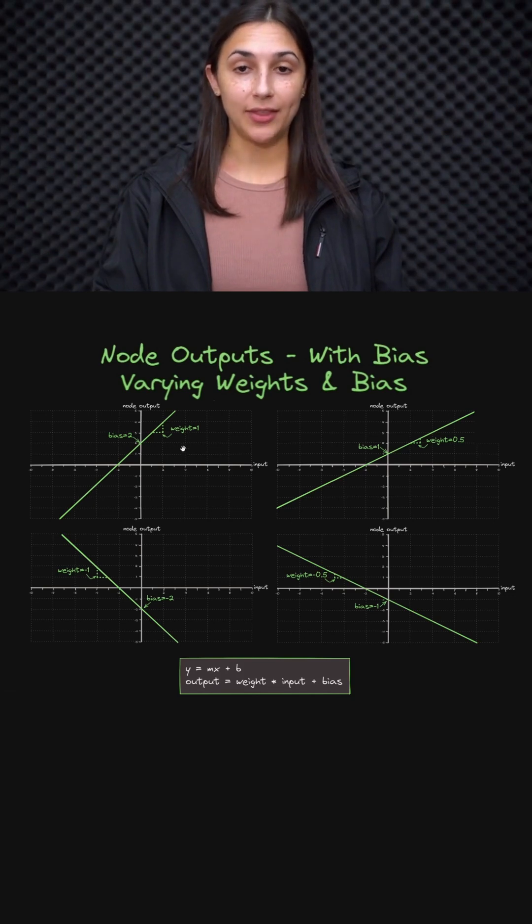And these four graphs, not only are we varying the weights in the same way that we did last time. So we have a weight of one here and 0.5 here and minus 0.5 and minus one. So we are varying the weights in each of these graphs, but now we're also varying the biases.